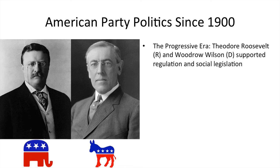Since 1900, the Progressive Era — around 1900 to 1920 — is what we call this period. Theodore Roosevelt was a Republican and Woodrow Wilson was a Democrat. They both supported regulation and social legislation, meaning not really a welfare state yet, but supporting some measures to help poor people.